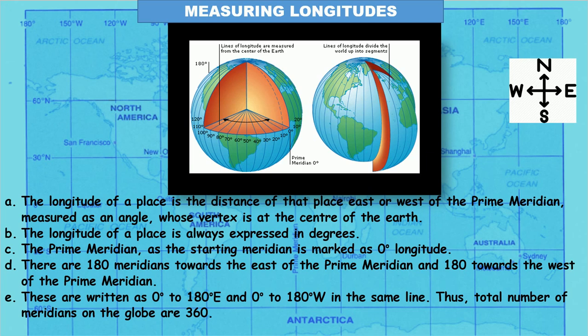That is all for today. We have discussed the heat zones and how to measure longitudes. In the next module we will cover locating places on the globe, longitude and time, and other topics. Watch the video three to four times for better understanding — watching repeatedly will help you learn. Read the book after watching the video for a clearer picture. Have a nice day, thank you.